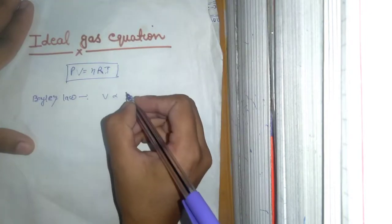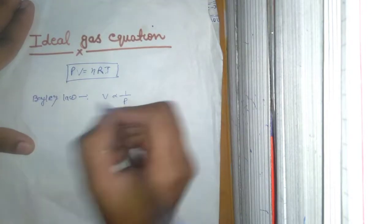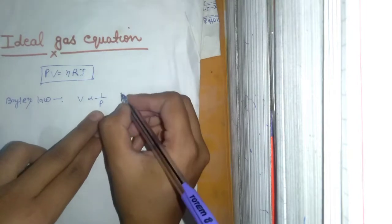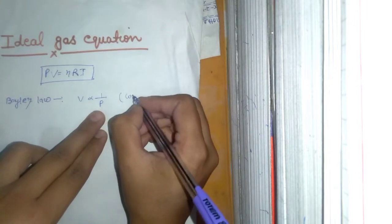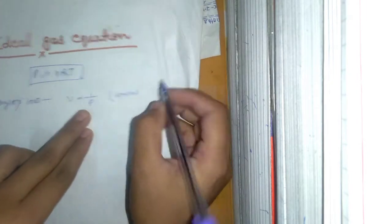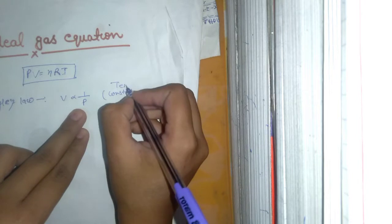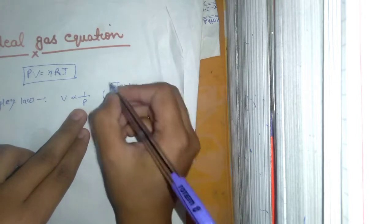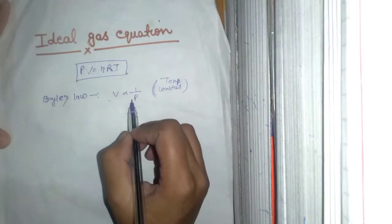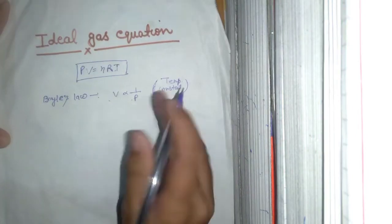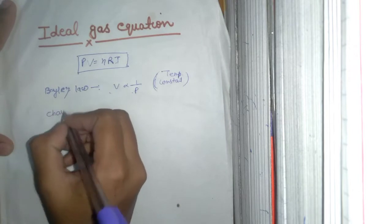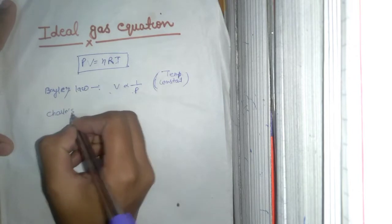In Boyle's law, volume is inversely proportional to the pressure. What is kept constant? Temperature is kept constant — volume is inversely proportional to pressure at constant temperature.